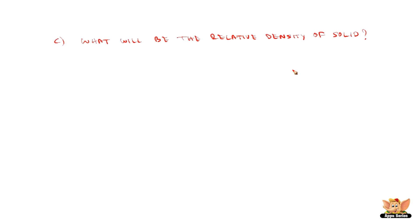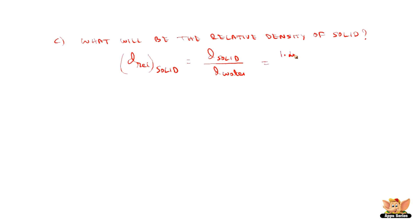Now we need to find what is the relative density of the solid. Relative density of the solid is defined as density of solid divided by density of water. The density of solid was found in part A as 1.42 and the density of water is 1, hence the relative density becomes 1.42. Relative density does not have any unit — it is a number.